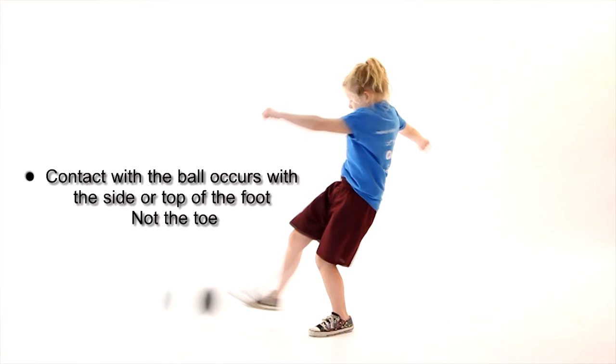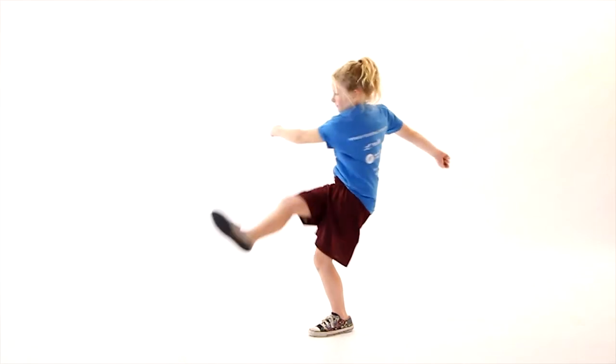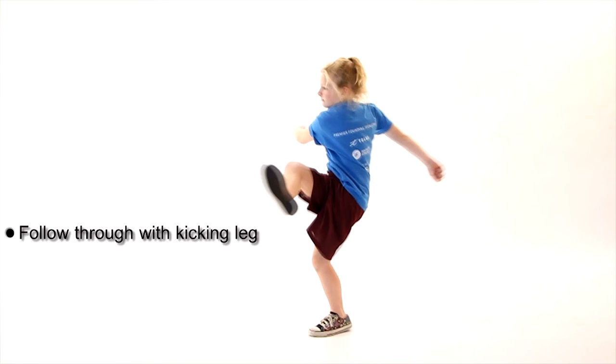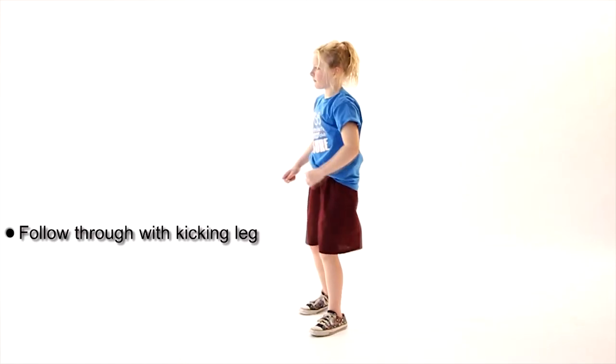Contact with the ball occurs with the side or top of the foot and not the toe. She's asked to swing the arm opposite to the kicking leg forward. Then she is asked to follow through in the direction of the target with the kicking leg.